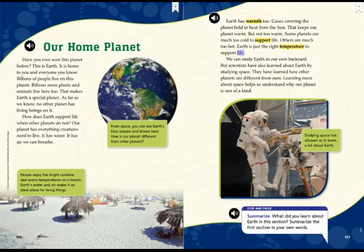We can study Earth in our own backyard, but scientists have also learned about Earth by studying space. They have learned how other planets are different from ours. Learning more about space helps us understand why our planet is one of a kind. Studying space has allowed us to learn a lot about Earth. Down here it says stop and check. Summarize. So to summarize means that we're giving the main idea of the section. So it says what did you learn about Earth in this section? Summarize the first section in your own words. I learned that Earth is home to billions of plants and animals. It has air we can breathe, water, and the right temperature to support life. It's not too hot. It's not too cold. Studying space helps us learn why Earth is one of a kind.